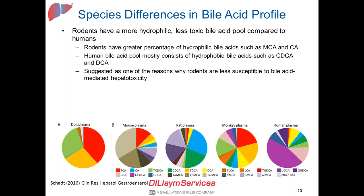A couple of important species differences to point out: first, rodents have a more hydrophilic, thus less toxic, bile acid profile compared to humans. Looking at the rodent bile acid profile, they have a greater percentage of hydrophilic bile acids such as muricholic acid or cholic acid. On the other hand, the human bile acid pool mostly consists of hydrophobic bile acids such as CDCA and DCA. One of the largest portions in human plasma is the glycine-conjugated chenodeoxycholic acid (GCDCA), which represents about half of overall human plasma bile acids.